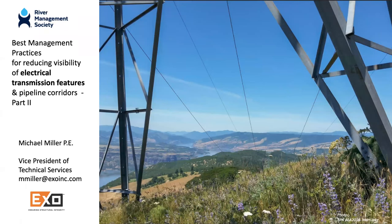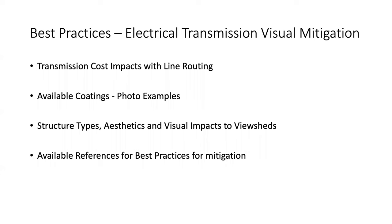Hi, I'm Michael Miller. I'm going to be covering part two of this session on best management practices for reducing visibility of electrical transmission features in pipeline corridors, mainly focusing on electrical transmission features. I'll be discussing these topics in order: transmission cost impacts with line routing, available coatings with some examples, structure types, aesthetics, visual impacts to view sheds, and then some available resources.